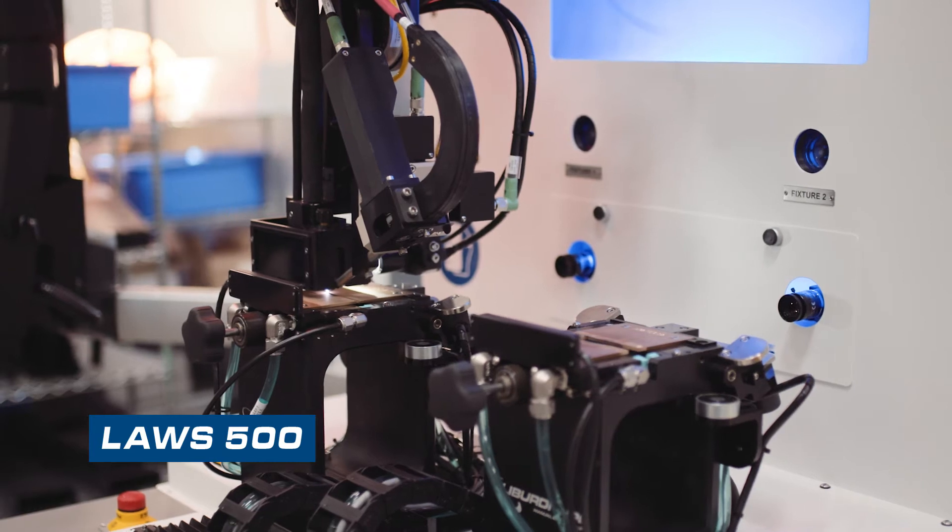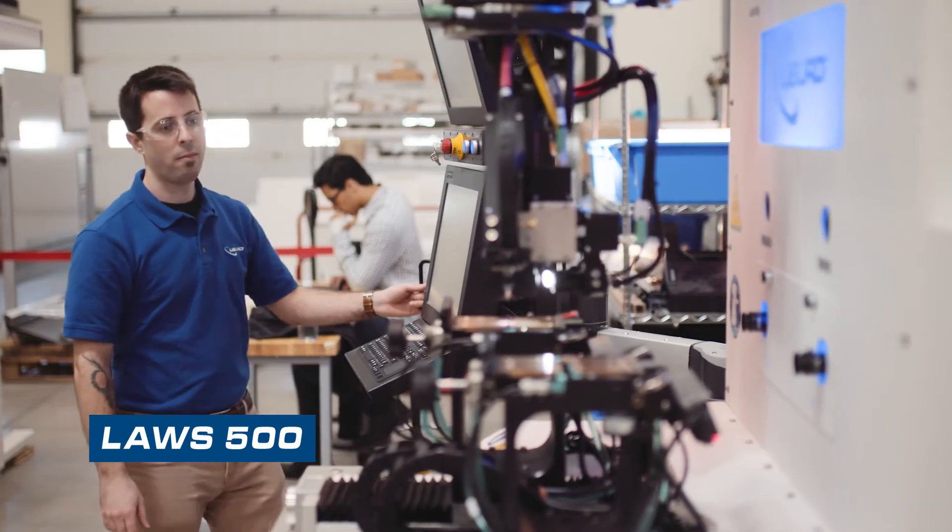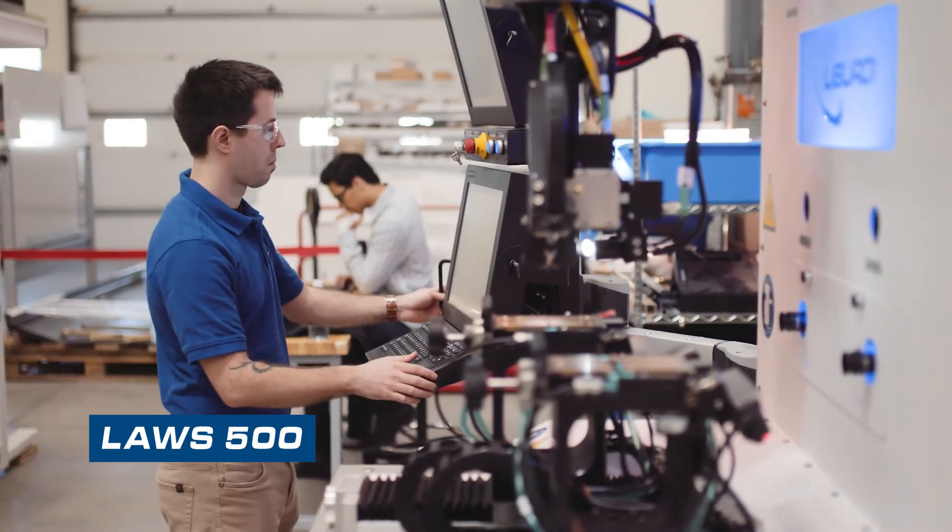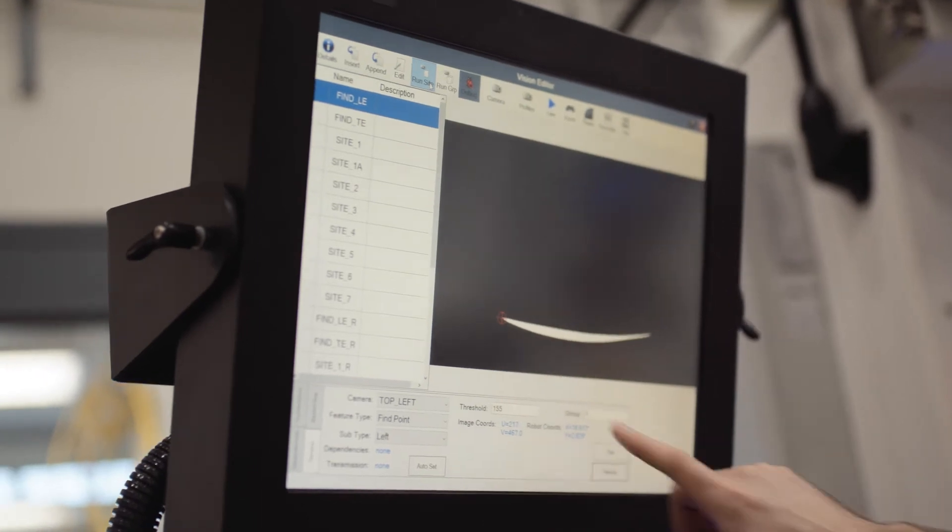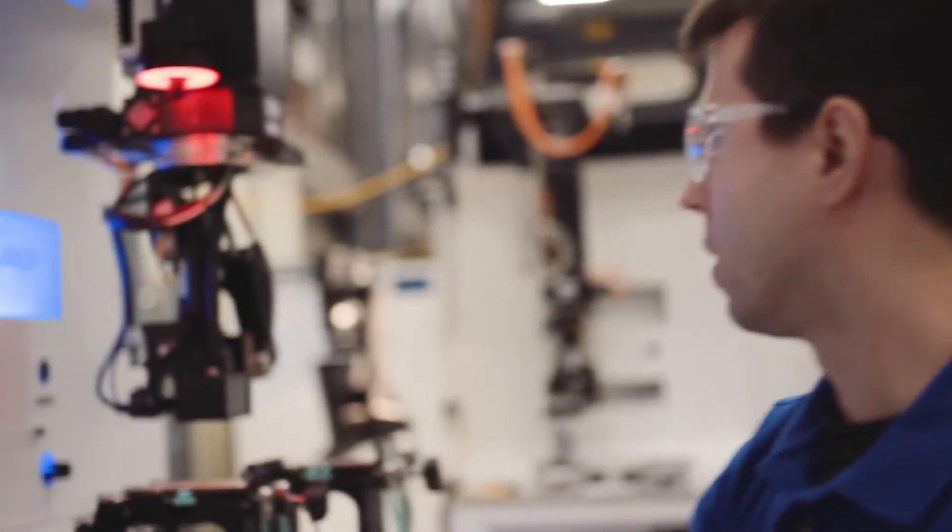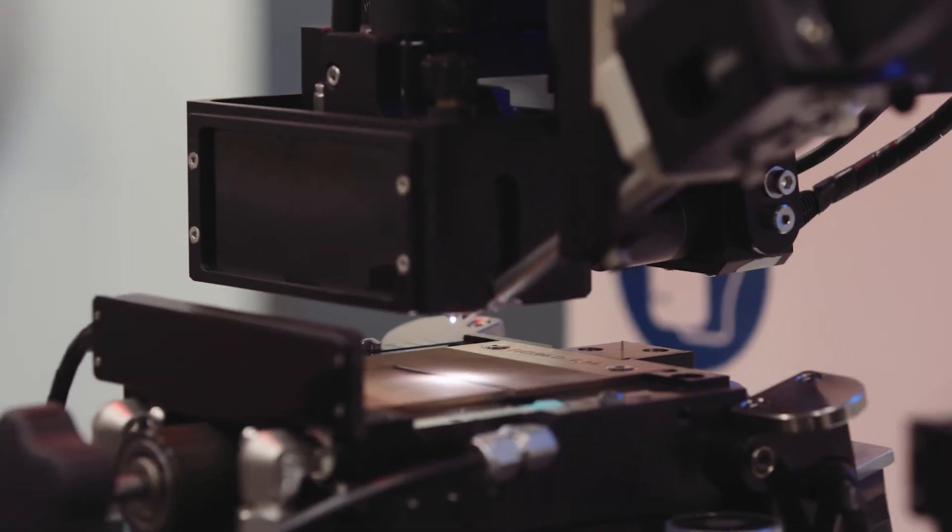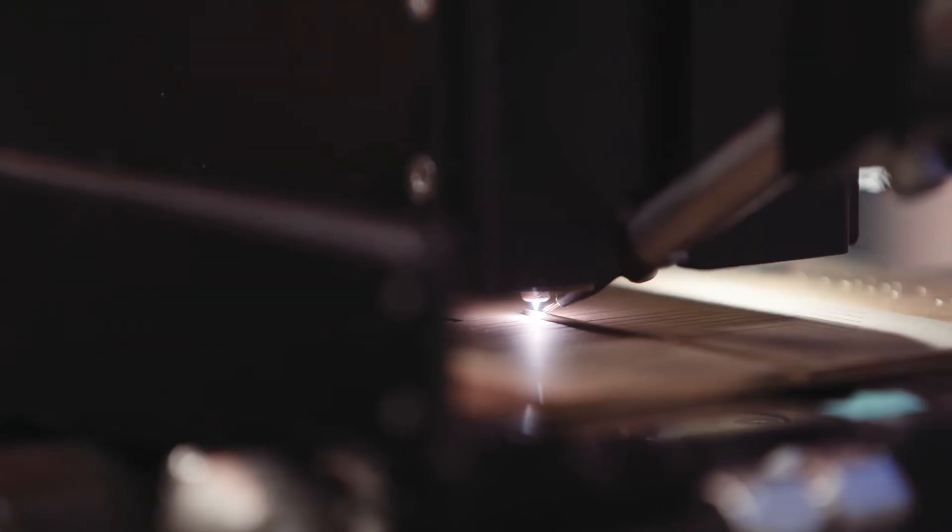The LAWS 500 is a fully coordinated robot used for welding complex shapes and challenging alloys. It has the smallest footprint of the LAWS product line, making it the perfect fit for busy production shops around the world.